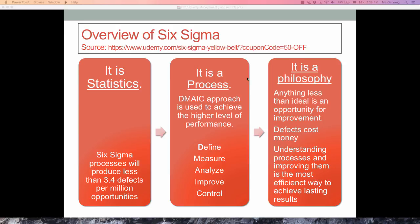And then finally, Six Sigma can be understood as a philosophy. Anything less than ideal or anything less than being perfect is an opportunity for improvement. Defect costs money. So, philosophy and culture, the highest quality culture and philosophy that companies are pursuing. This is the way you can understand Six Sigma: it can be statistics, it can be a process, it can be a philosophy.